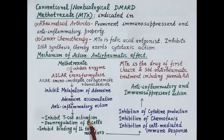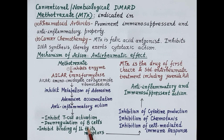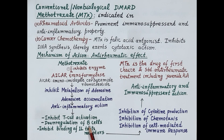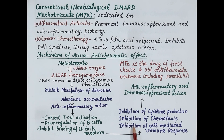Inhibition of T cell activation reduces production of inflammatory cytokines like interferon gamma and interleukin-17. Methotrexate also produces downregulation of B cells, reducing the number of B cells and therefore reducing generation of antibodies like rheumatoid factor. It also inhibits binding of interleukin to its receptor.